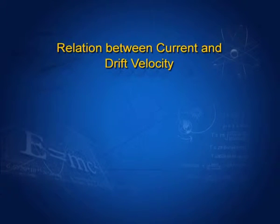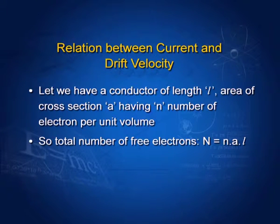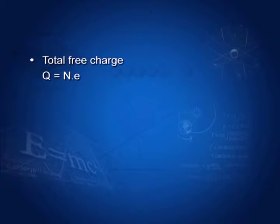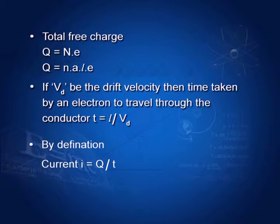Relation between current and drift velocity: consider a conductor of length L, area of cross section A, having N number of free electrons per unit volume. The total number of free electrons N_total equals N × A × L. The total free charge Q equals N × A × L × e. If V_d is the drift velocity, then the time taken by an electron to travel through the conductor T equals L upon V_d. By definition, current I = Q/T. Substituting the values, we get I = A × N × e × V_d.